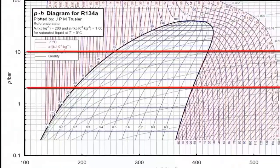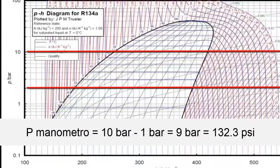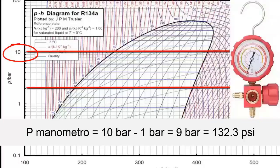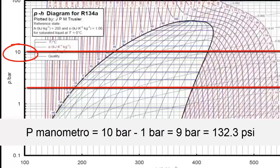In the Mollier diagram, for this temperature value there is an absolute pressure of 10 bars. To find the pressure that the manometer should read, we must subtract the atmospheric pressure from the absolute pressure. By subtracting 10 bars minus 1 bar from the atmospheric pressure, we have a manometer pressure of 9 bars. Then the high or red pressure gauge should read 9 bars or 132.3 psi.